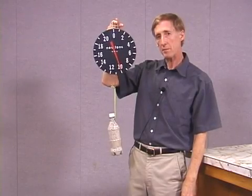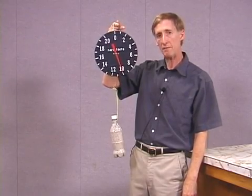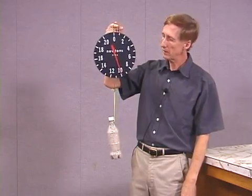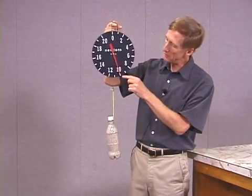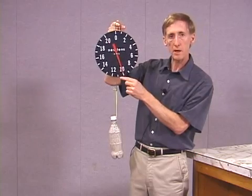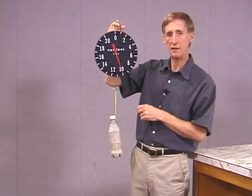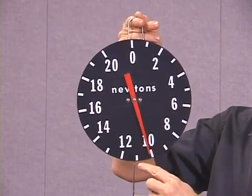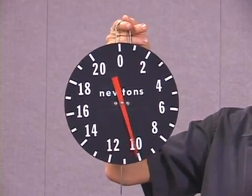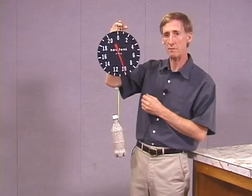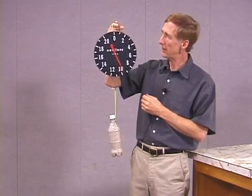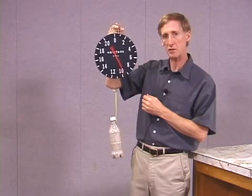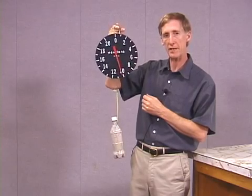So we've seen that to keep the object in equilibrium, I have to exert a force upward that's equal to the object's weight. Now you may have noticed that as I've been holding this, the needle has been oscillating back and forth around 10. So since the needle is reading different things, even while I'm holding the same bottle here, there must be something involved other than just the weight of the bottle.